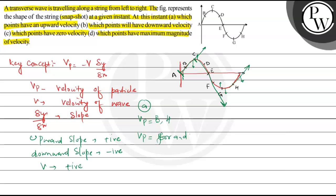So here the direction is positive. Using minus V into (∂y/∂x) — where ∂y/∂x is positive — the particle velocity that we get will be negative.